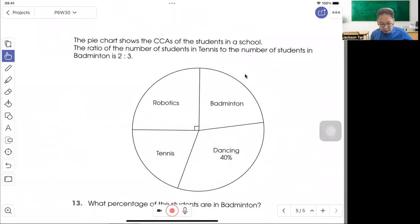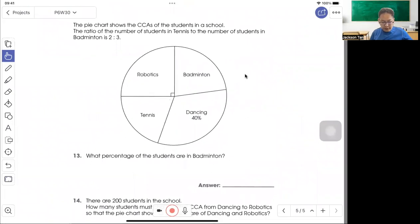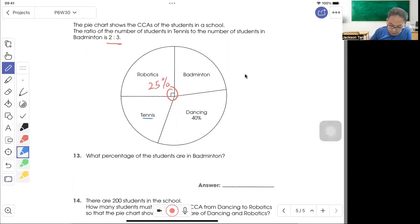The pie chart shows the CCA of the students in school. The ratio of the number of students in table tennis to the number of students in badminton is 2 to 3. So here's a very important statement. Question 13, what percentage of students in badminton? First, here there's a right angle, it means 1 quarter, 25%. So to find the tennis and badminton, what we can do is take 100%, minus 25, minus 40. We know that it's 35%. So 35% is the tennis and badminton.